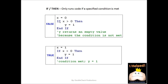Here's an example. We start off with x equals 0. The question asks: if x is greater than 0, then we assign y a value of 1. However, the condition isn't met because x equals 0, which is not greater than 0, therefore it returns false and y returns an empty value. Now if x equals 1 with the same condition, the condition is met and y is assigned a value of 1.